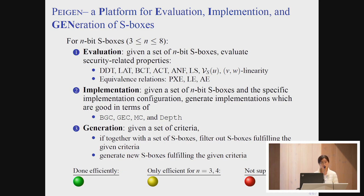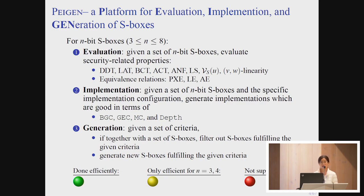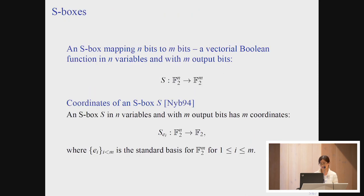I will introduce three aspects of the platform's functionality for S-boxes. I use a green ball to indicate that Pagan can provide the functionality efficiently, a yellow ball to indicate that Pagan is only efficient for small S-boxes, and a red ball to indicate that the corresponding functionality is currently not supported by Pagan.